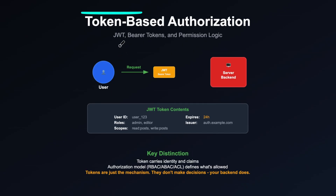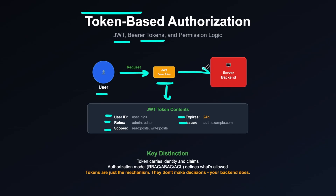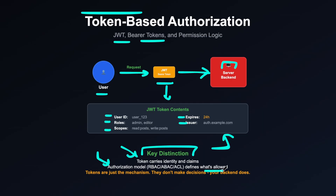Next, we have token-based authorization using JWTs or bearer tokens. Once a user is authenticated, most systems issue a JWT token that carries information like the user ID, roles such as admin or editor, scopes defining what they can access, the token expiry, and the issuer. Whenever a user makes a request, this token is sent to the backend server, which checks token validity and applies the appropriate permission logic. Importantly, the token carries the user's identity and claims, while the authorization model — RBAC or ABAC — defines what that user is actually allowed to access.